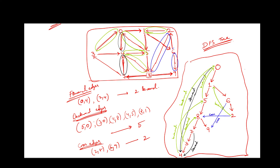Therefore, in this given graph, after finding the DFS tree, there are 2 forward edges, 5 backward edges, and 2 cross edges. When a directed graph is given, we can draw a DFS tree and from the DFS tree we can find the number of forward, backward, and cross edges. Thank you.